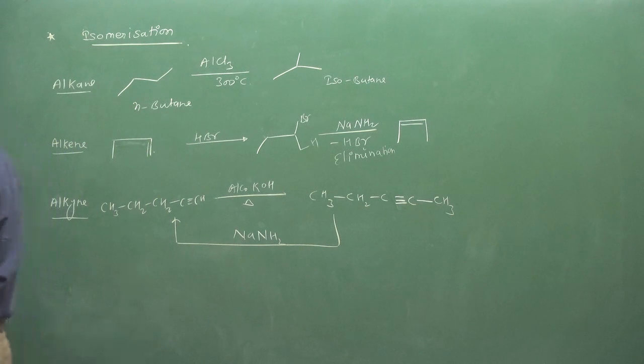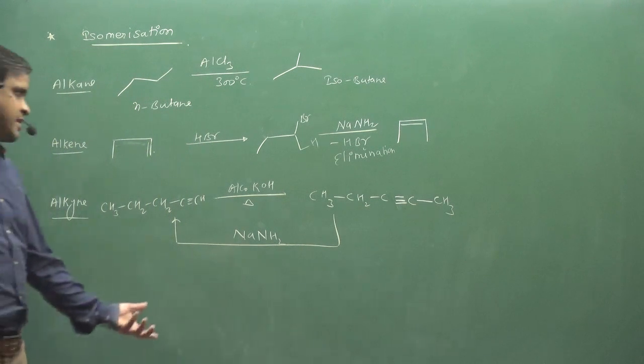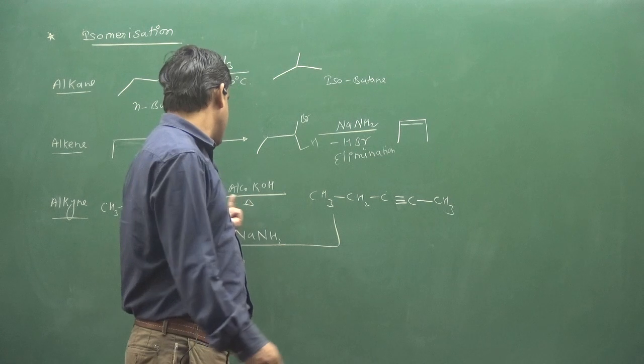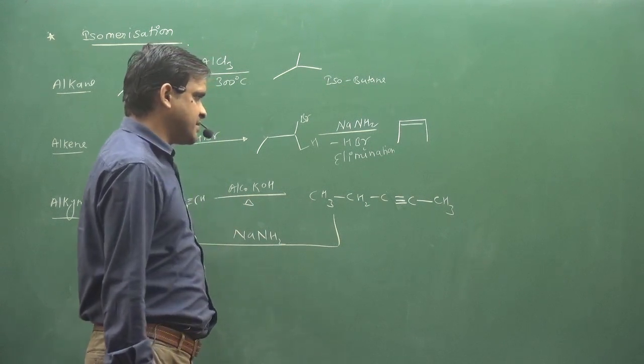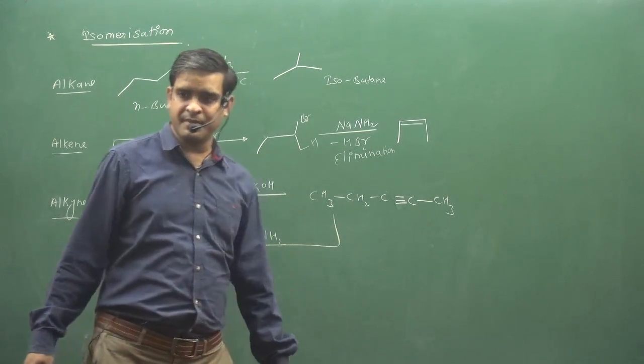For alkynes, one degree alkynes or terminal alkynes, we can talk about butyne or pentyne. You have pent-1-yne and pent-2-yne, which can be interconverted.